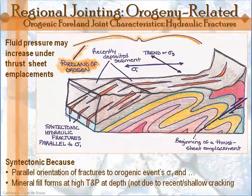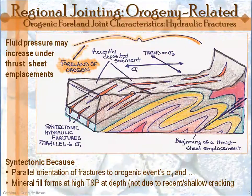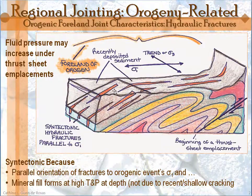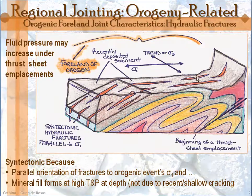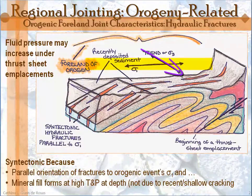We'll start off talking about the morphology of orogenic forelands. When you have an orogeny, when you have a compressional event that is going to involve mountain building, you have a lot of folding and a lot of regional deformation that takes place. One of the characteristics of these regions is hydraulic fracturing. The hydraulic fractures you would expect to see in these orogenic forelands have a special orientation — they're oriented parallel to sigma-1 or perpendicular to sigma-3, which makes them tensile or extensional joints.